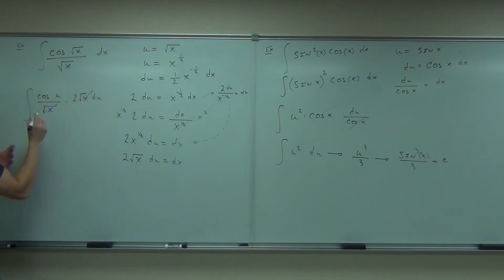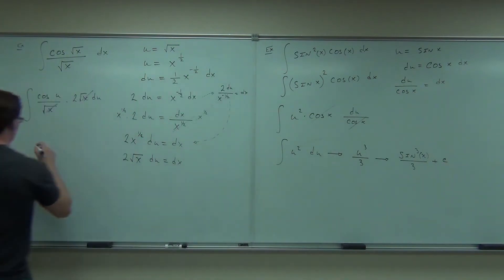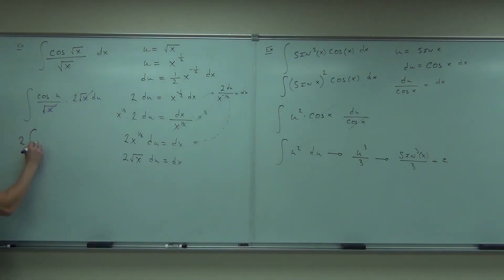So that's gone. Now I'm good to go. By the way, that 2, is that a 1 half or a 2 over 1? What is that? So when I pull this out in front of my integral, it's 2 cosine u du.